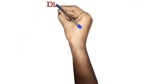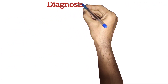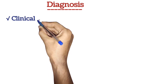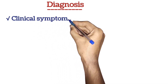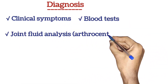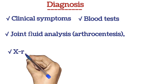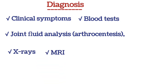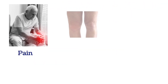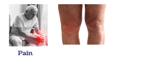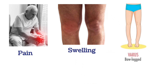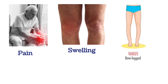Diagnosis: The diagnosis of knee OA involves a combination of clinical symptoms, blood tests, joint fluid analysis, arthrocentesis, X-rays, and sometimes MRI. Symptoms include pain, joint stiffness, swelling, crepitus, varus deformity, synovial thickening, and effusion.